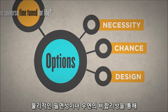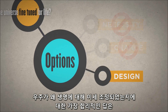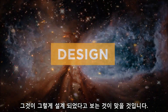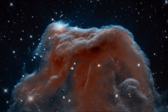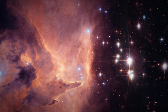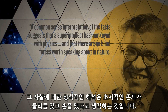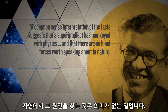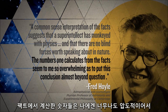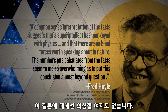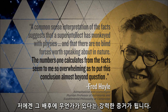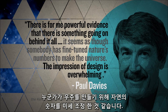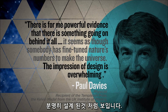Given the implausibility of physical necessity or chance, the best explanation for why the universe is fine-tuned for life may very well be: it was designed that way. A common-sense interpretation of the facts suggests that a super-intellect monkeyed with physics, and that there are no blind forces worth speaking about in nature. The numbers one calculates from the facts seem so overwhelming as to put this conclusion almost beyond question. There is powerful evidence that there is something going on behind it all. It seems as though somebody has fine-tuned nature's numbers to make the universe. The impression of design is overwhelming.